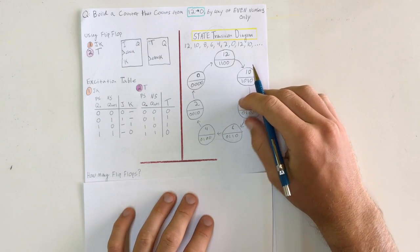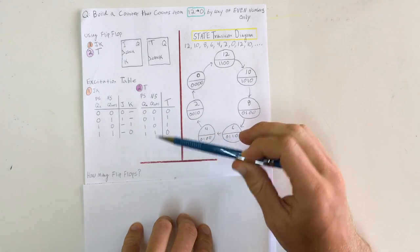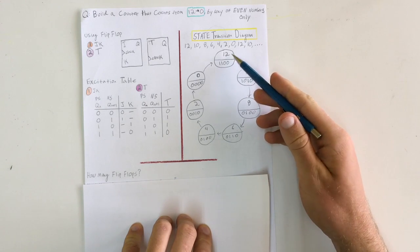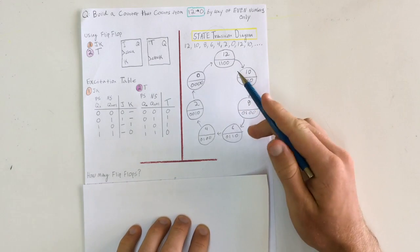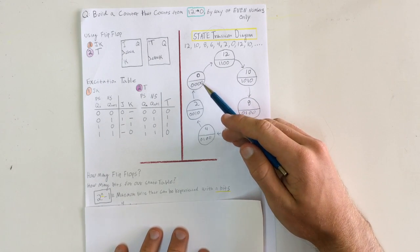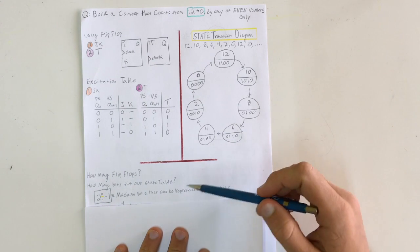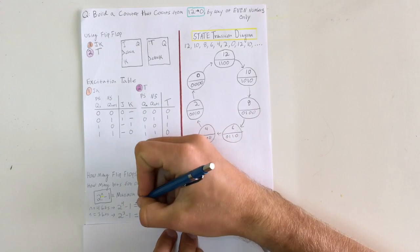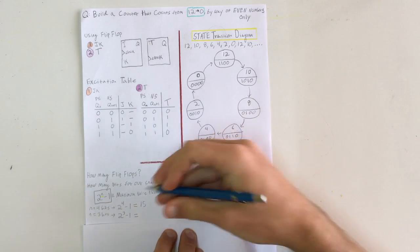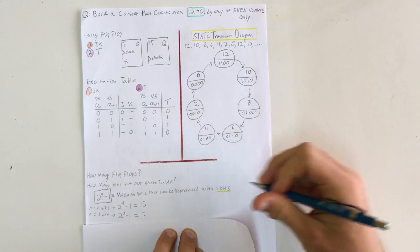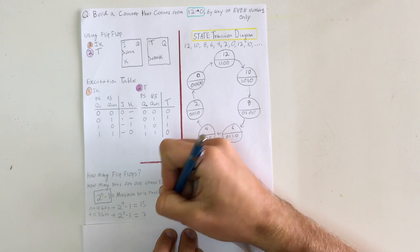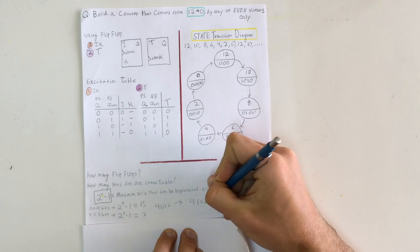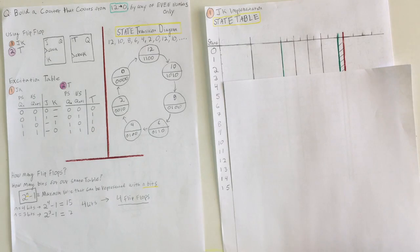The next thing to consider is how many flip-flops we'll be using. Whether we use JK or T flip-flops, the number remains the same. The number of flip-flops corresponds to the number of bits needed to represent our counter. Using the equation 2^n - 1, which gives the maximum value representable with n bits: with 4 bits we can represent up to 15, covering our maximum of 12, while 3 bits only covers up to 7. So we need 4 bits and therefore 4 flip-flops.